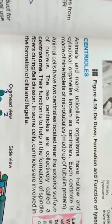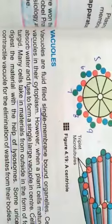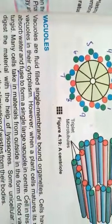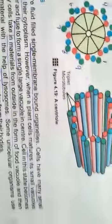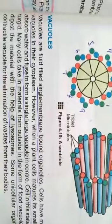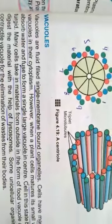Next is vacuoles. Vacuoles are fluid-filled single membrane bound organelles. Cells have many vacuoles in their cytoplasm. They have many vacuoles in their cells.